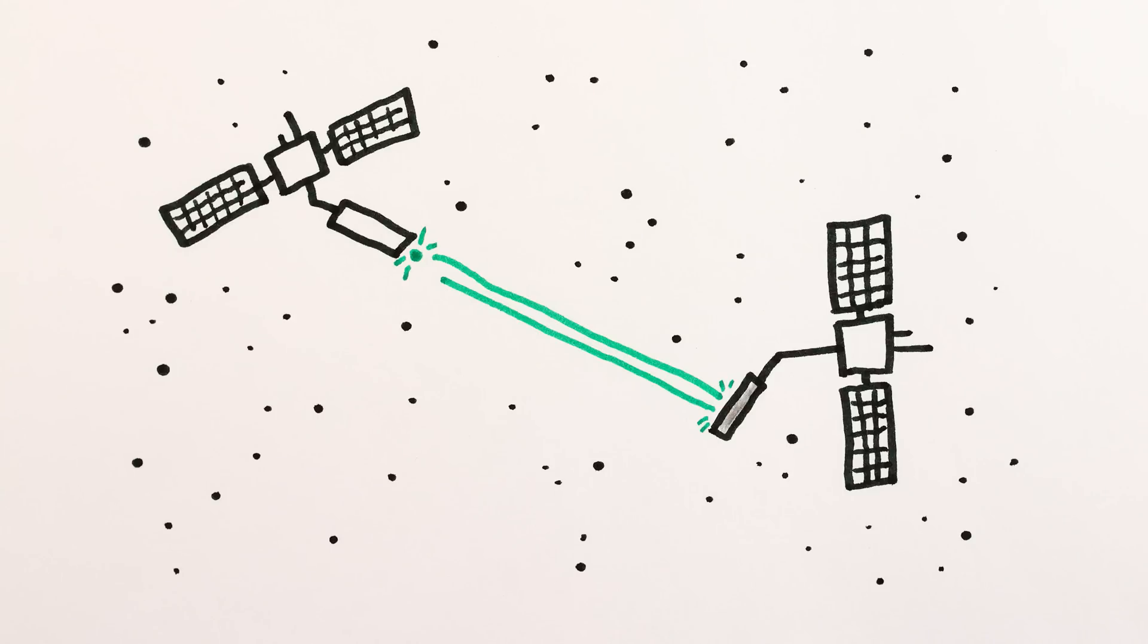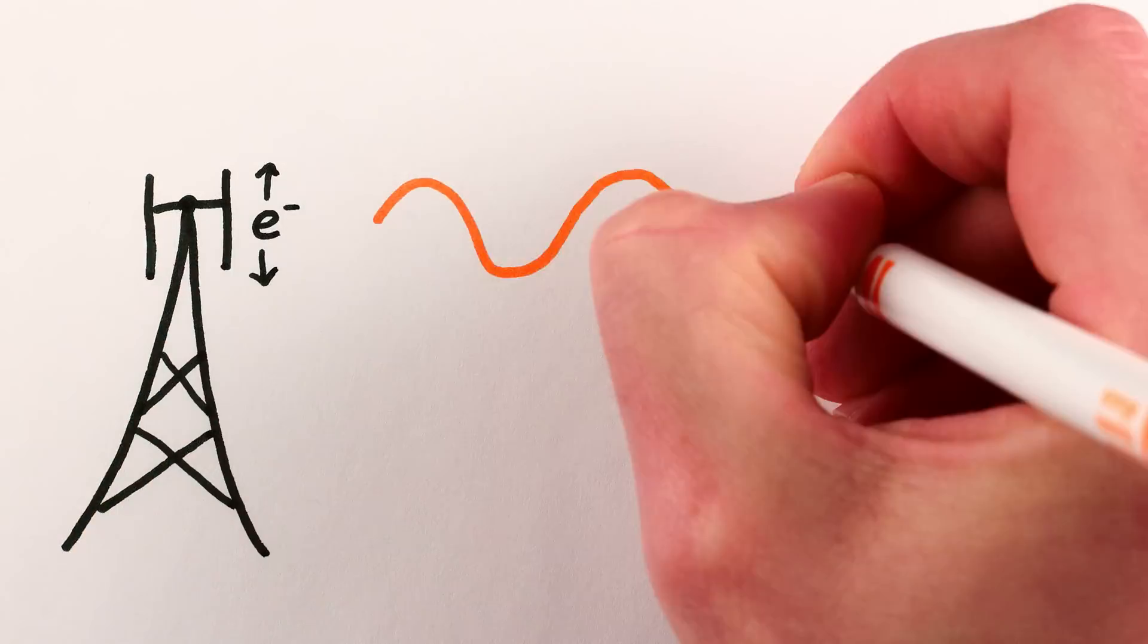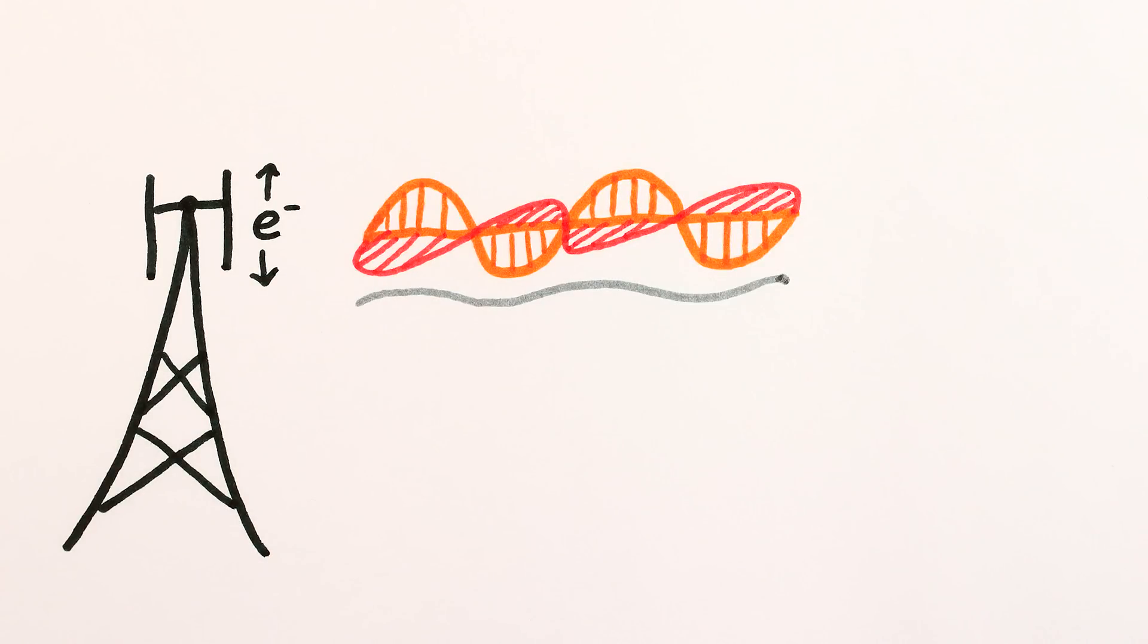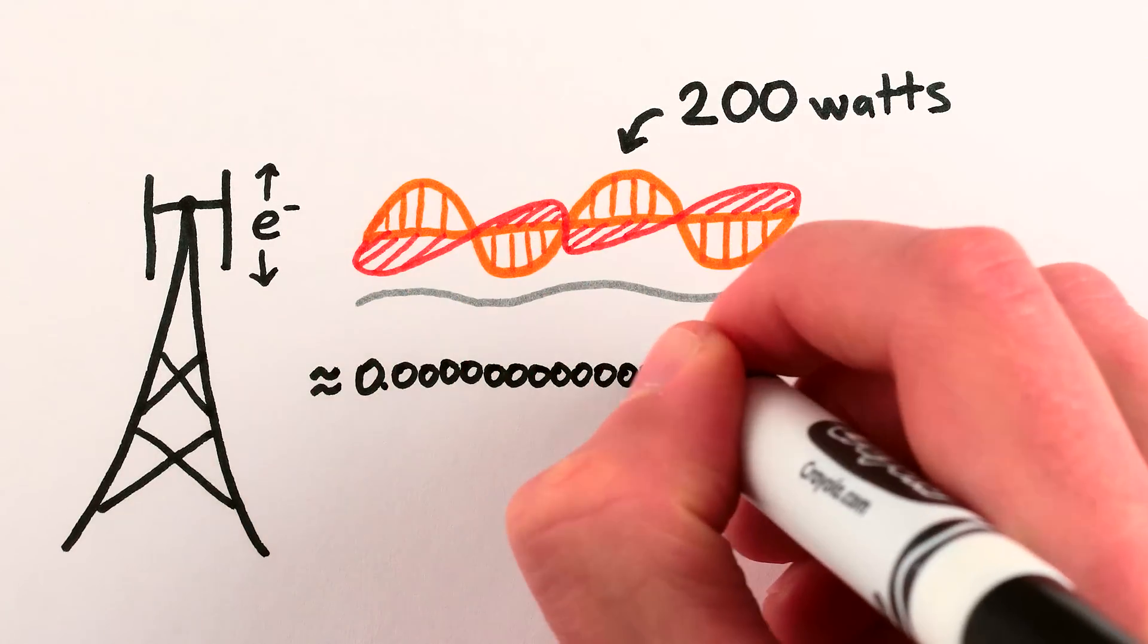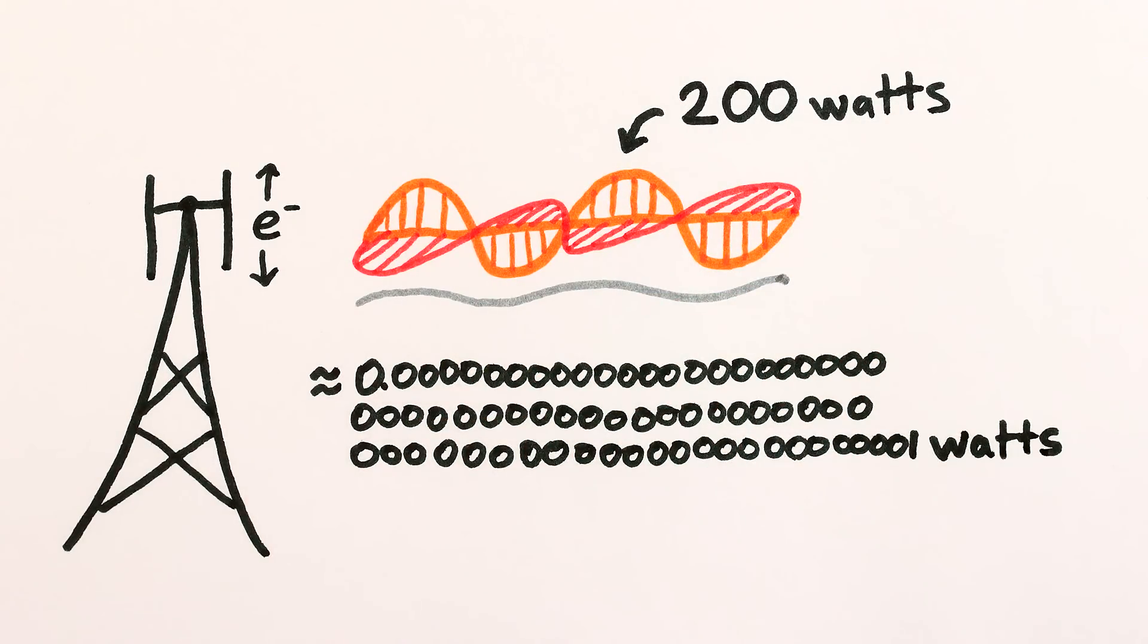The reason physicists need fancy floating mirrors to detect gravitational waves is that the waves are very, very weak. For example, the electrons that vibrate back and forth in a radio antenna to make electromagnetic waves also make gravitational waves. Electrons are matter moving back and forth, after all. But the waves they make are super-weak. A 200-watt radio transmitter gives off something like a quadrillionth of a quintillionth of a quintillionth of a quintillionth of that amount of power as gravitational radiation.